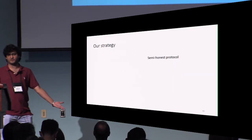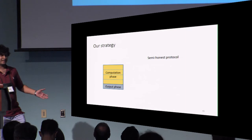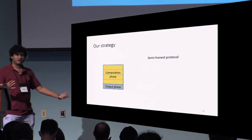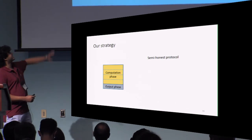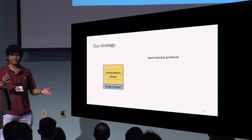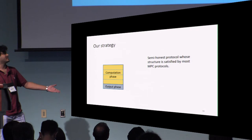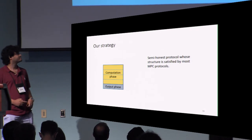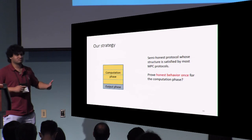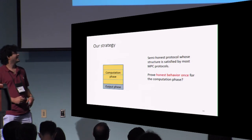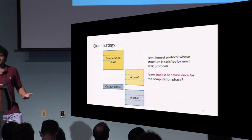Our strategy is to start with a semi-honest protocol of a specific type: split into a computation phase and an output phase. The computation phase is when each party computes a share of the output, and can span multiple rounds. The output phase is typically a single round where parties exchange shares and compute the output locally. This structure is satisfied by most MPC protocols we know of. This leads to the idea: can we prove honest behavior just once for the entire computation phase?